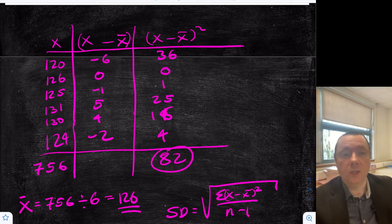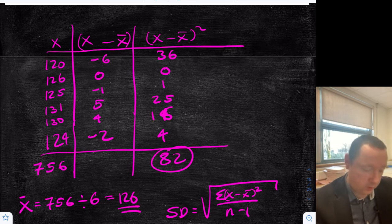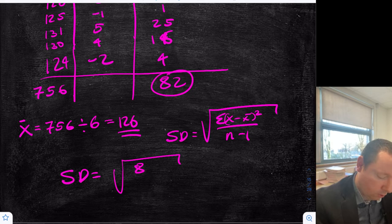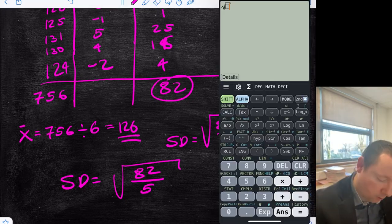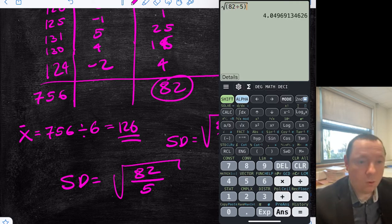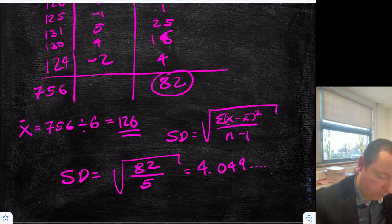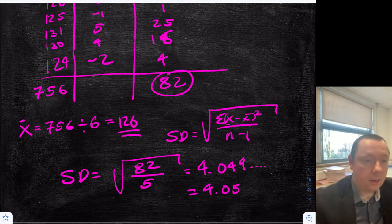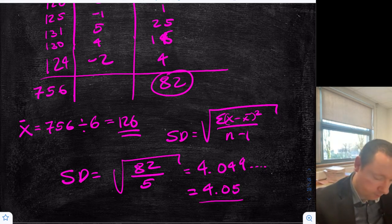Substituting into our formula: standard deviation equals the square root of 82 divided by 5. Using brackets: square root of 82 divided by 5 gives 4.049, or 4.05 if you want to round. And that's the number of customers. So we've got our two answers, and now we need to do Part B.